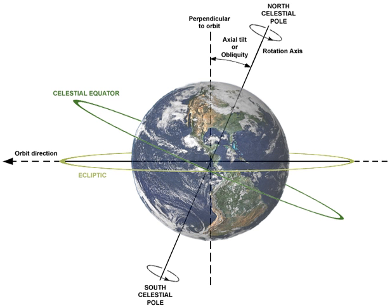The stellar obliquity ψs, i.e. the axial tilt of a star with respect to the orbital plane of one of its planets, has been determined for only a few systems.